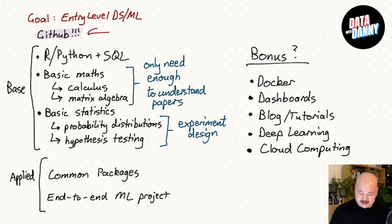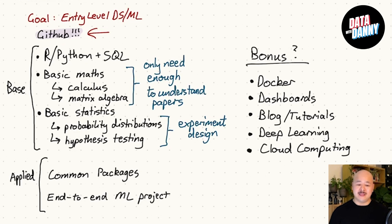You might notice that I've put GitHub and highlighted it. To reiterate, GitHub is very, very, very important. We do a lot of software development in our daily roles, and one very easy way to stand out as an entry-level hire would be to have very good Git skills — version control skills. Also, if you have your own website that's run from your GitHub, that's very, very impressive.